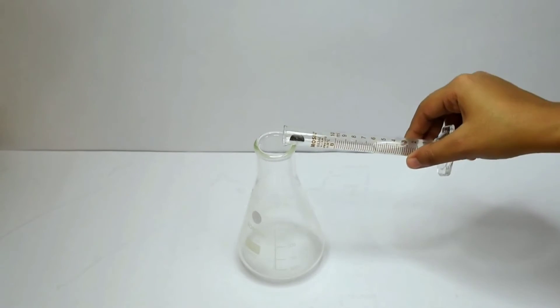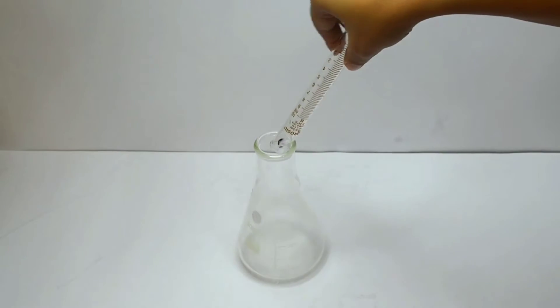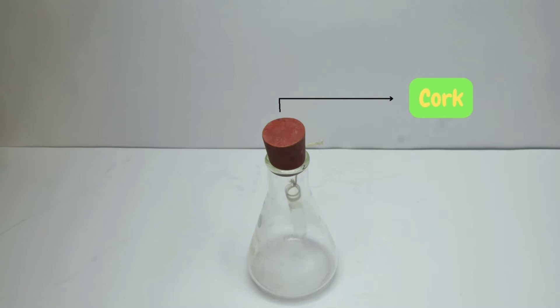This solution is then poured into a clean and dry conical flask. The ignition tube with barium chloride is then hanged inside the conical flask and secured with a cork on its mouth.